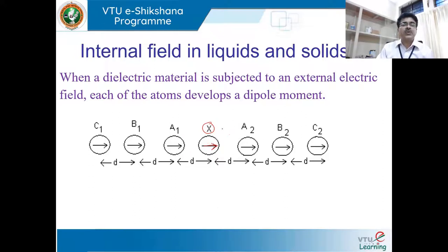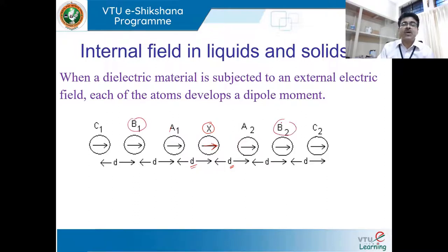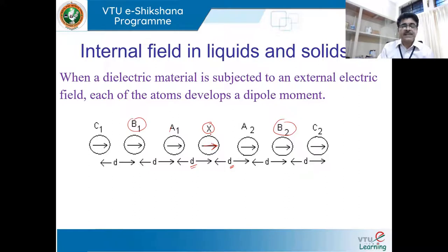The neighboring atoms A1 and A2 are placed on the left and right side at equal distance D from x. They also exhibit dipole moment in the same direction. Similarly, atoms B1 and B2 are equally spaced at 2D from the center atom, and C1 and C2 are at 3D distance from dipole x — they all exhibit dipole moment.